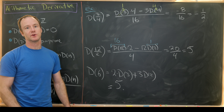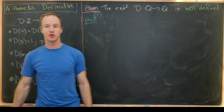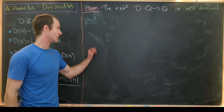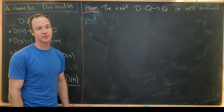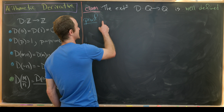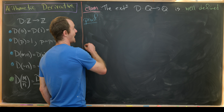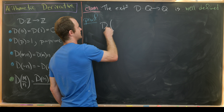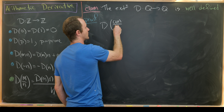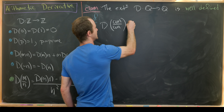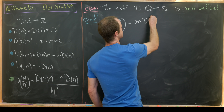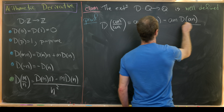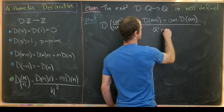That provides evidence we're okay, but we need a proof that the extension is well defined. We'll show this by taking two representations of a rational number: m/n and (a·m)/(a·n). Calculating d(am/an), that equals (a·n·d(am) − a·m·d(an)) over a²·n². We can factor an a out of the numerator and cancel it with one of the a's in the denominator.